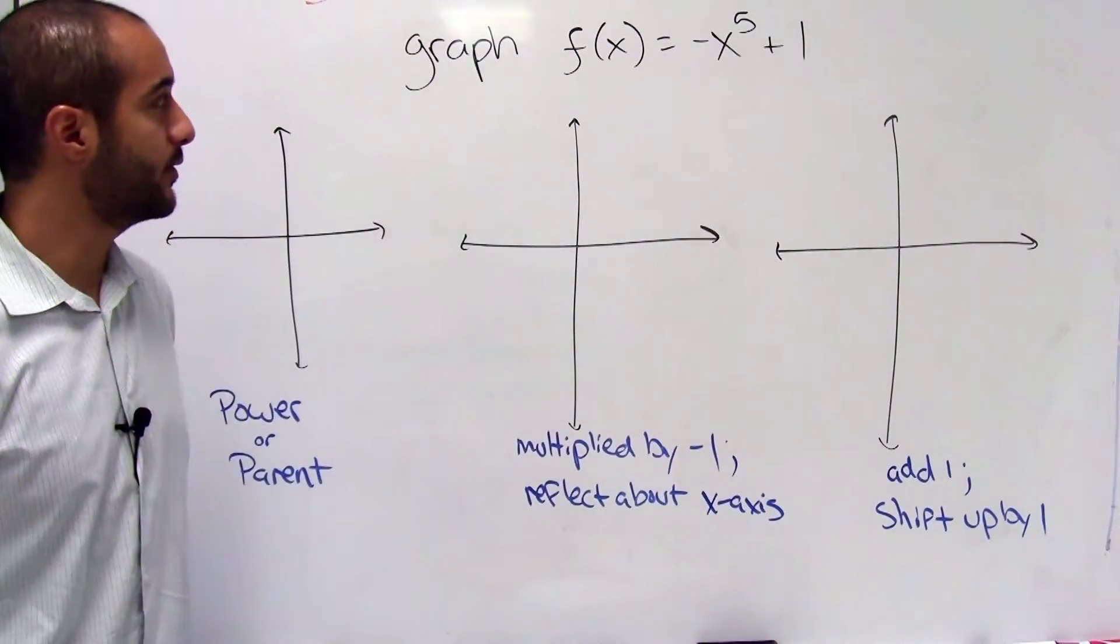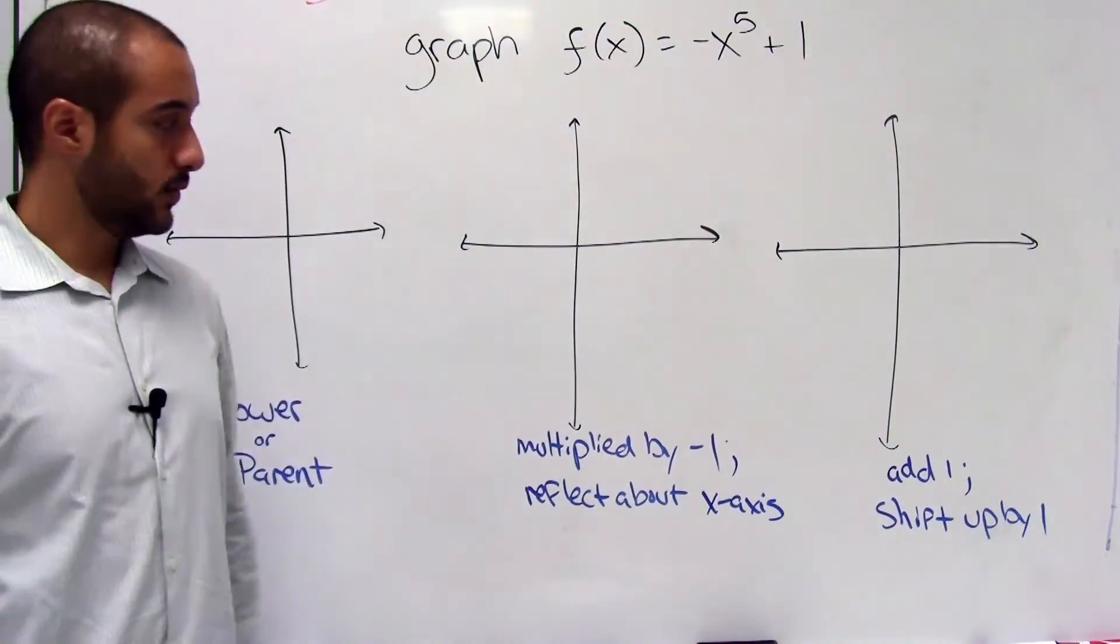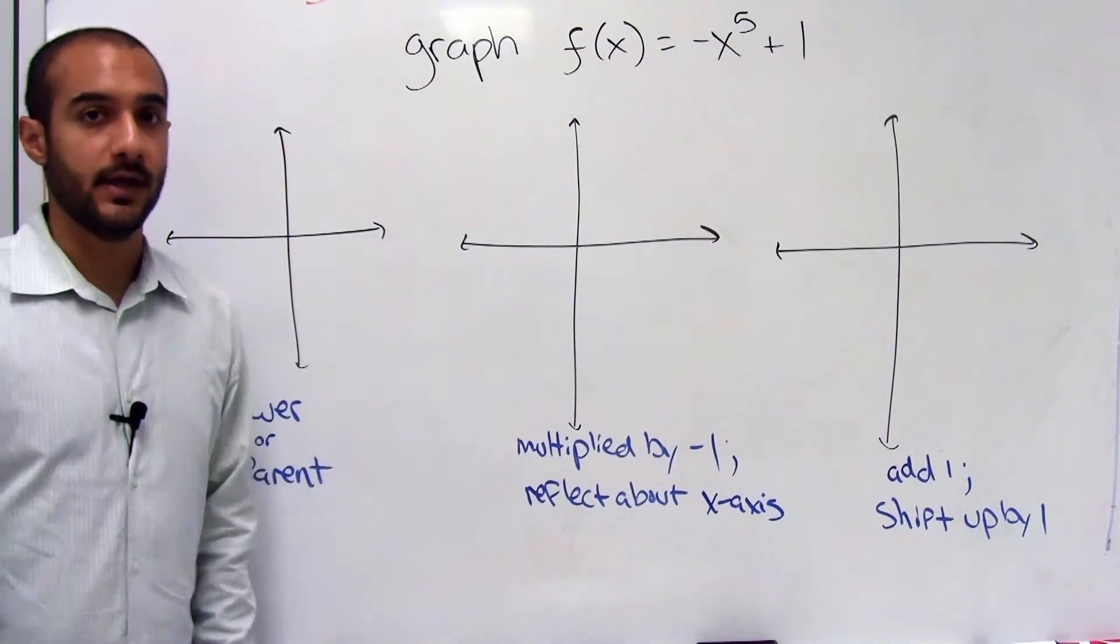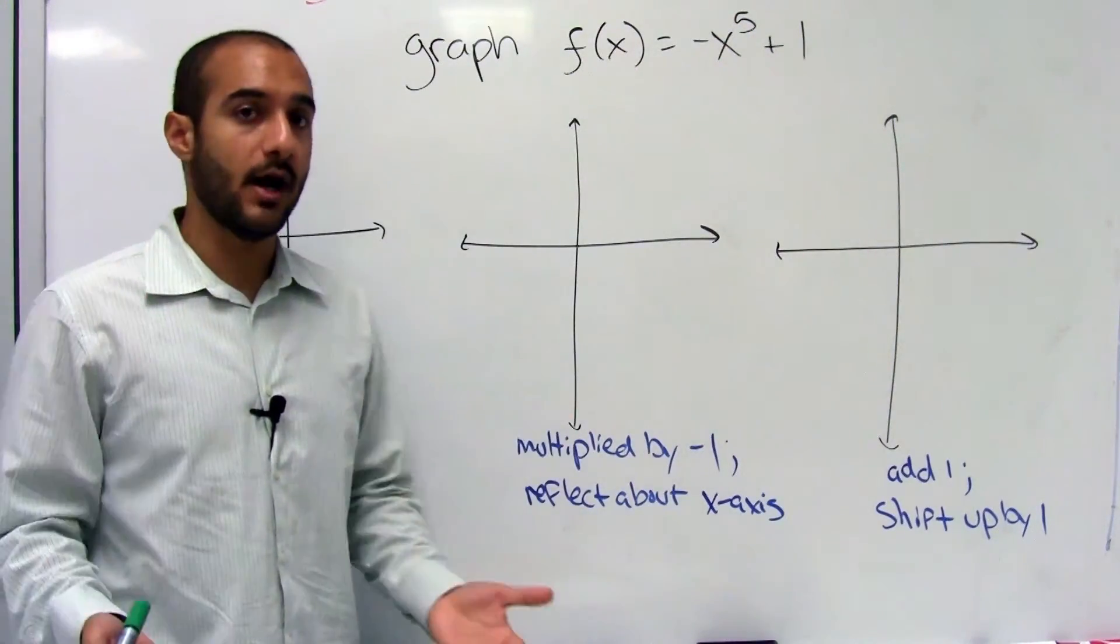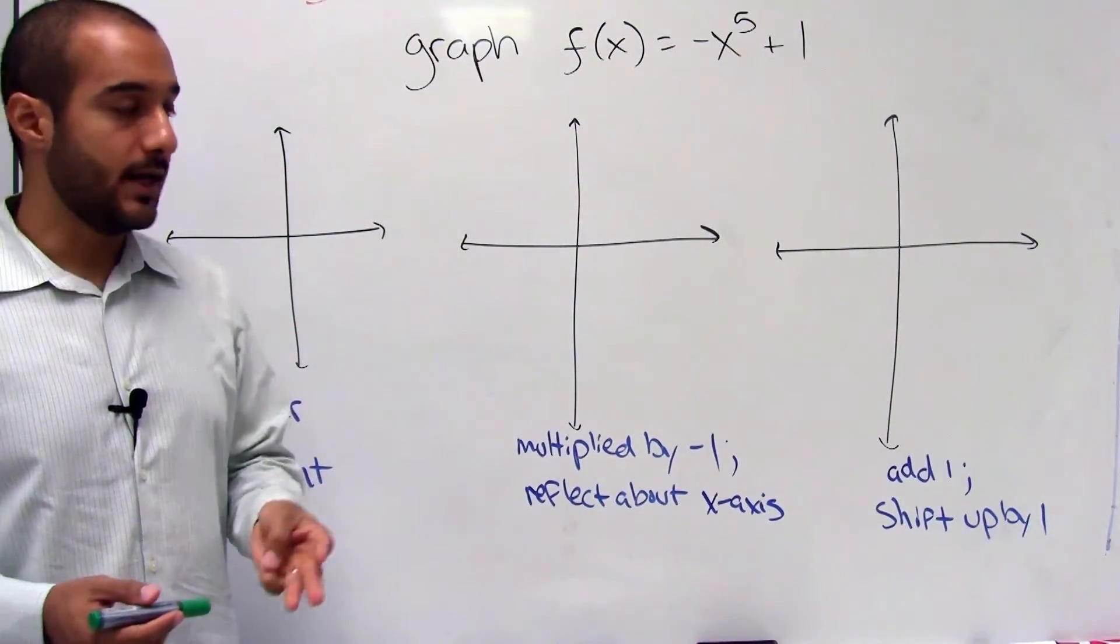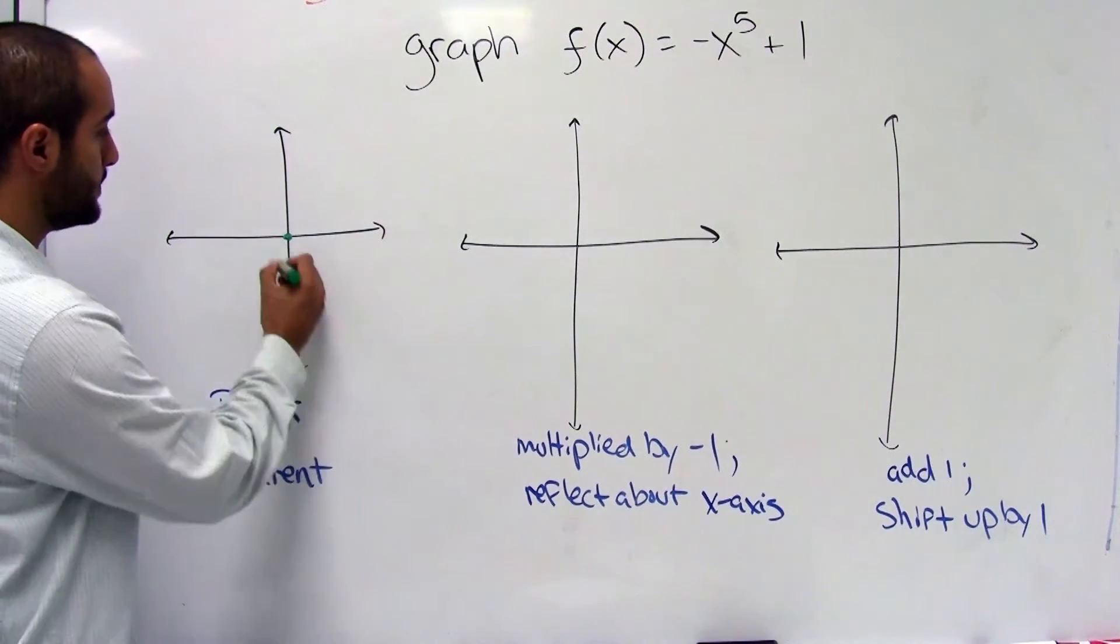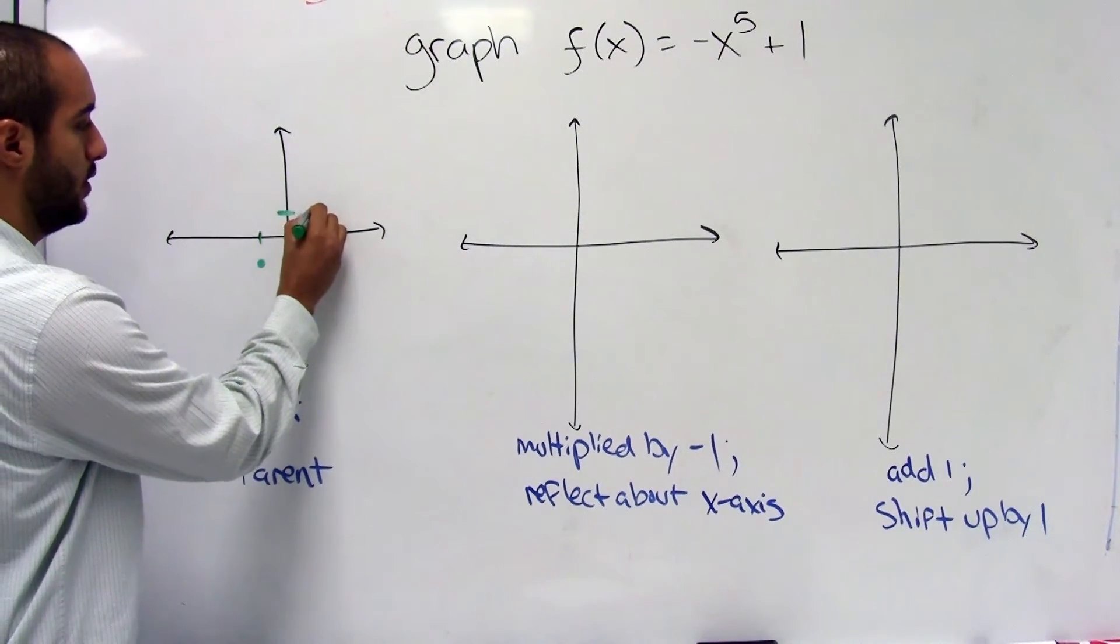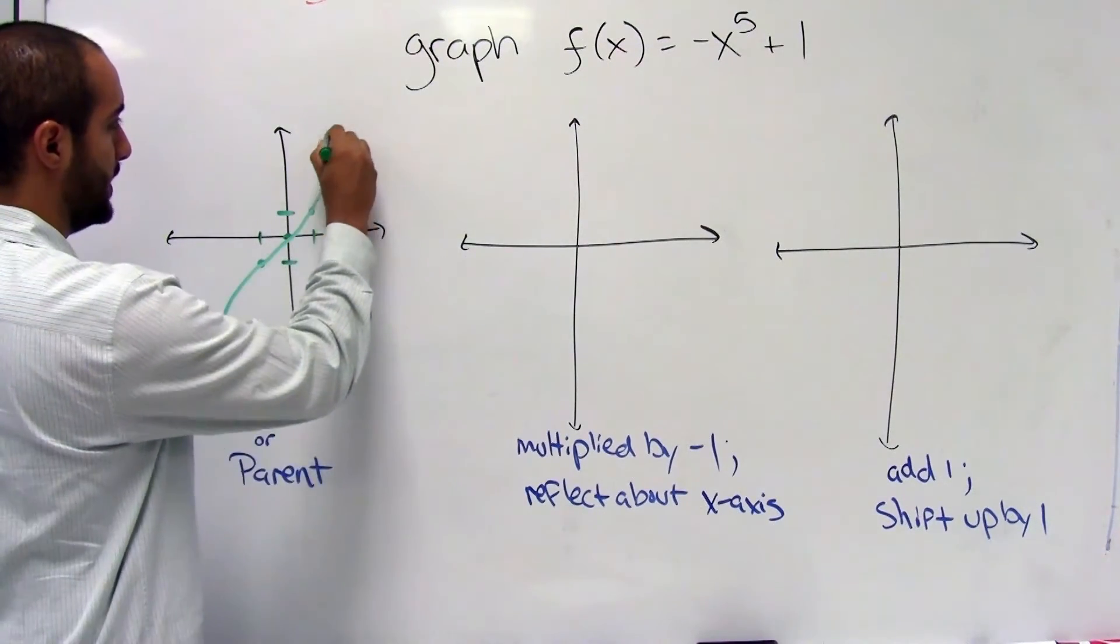Alright, so here they're asking me to graph f of x is equal to negative x to the 5th plus 1. So what you'll do is graph the power or parent function, as some people call it, and we see that it's x to the 5th, so we know that it's an odd number. Remember, we know that that's going to look like a cubic, and they actually always contain three points. They always contain the points 0, 0, negative 1, negative 1, and 1, 1. So we know that it's going to look something like this.